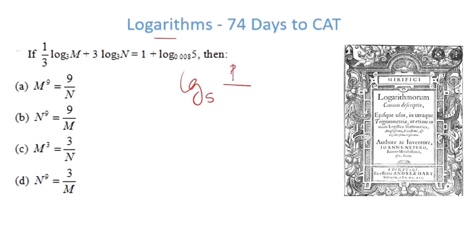For example, if I have log base 5 of 25, it converts 25 as a power of the base. 25 can be written as 5 squared, so it returns 2 as the output.